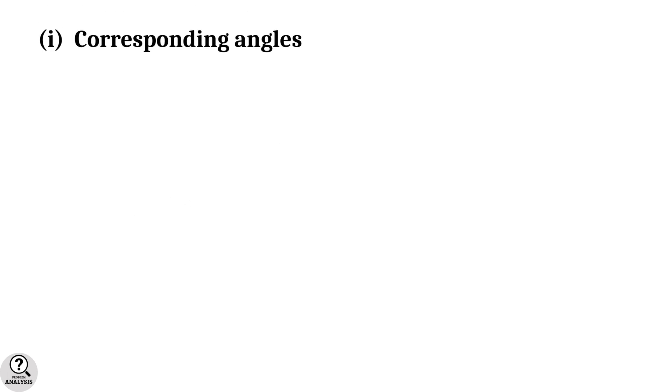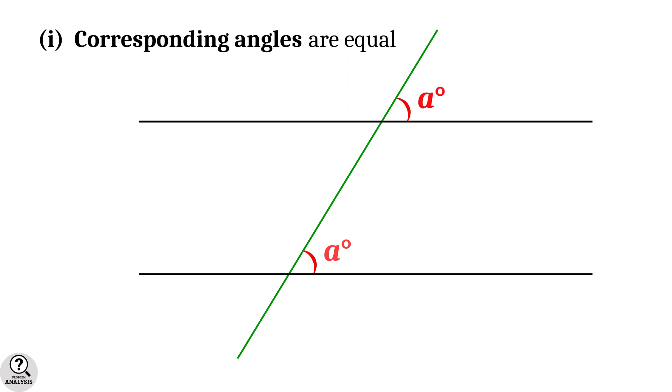First one is corresponding angles. Consider a pair of parallel lines and another line that is crossing them. Then the pair of angles formed at these crossing points are known as the corresponding angles, and they are equal. Note that there are three more pairs of corresponding angles.